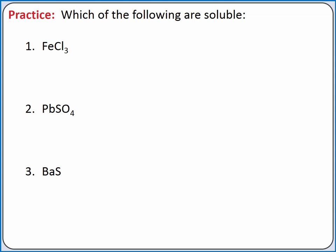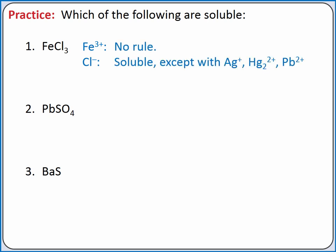In our first example, iron chloride splits apart into iron 3+ and chloride ions. Iron 3+ is not in our table, but chloride is. Chloride salts are generally soluble, and iron 3+ is not in the exceptions. So iron 3 chloride should be soluble.